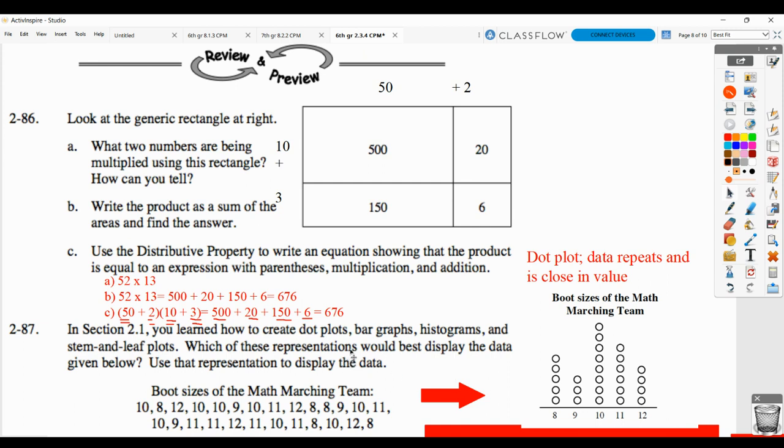You might also talk about why other representations would not work. So a bar graph is usually used for categorical data, which we have numerical data. Histograms are used when you have intervals, and the data is not so close together. And stem and leaf plots, again, are worked when you have things like 10s, 20s, 30s. All of these are, again, very close together and wouldn't make sense in a stem and leaf plot either.